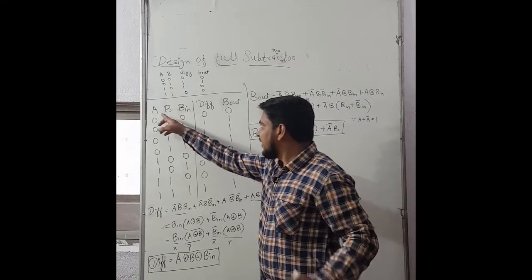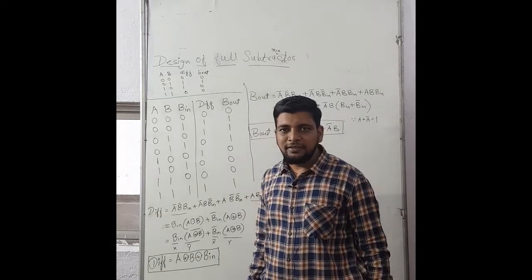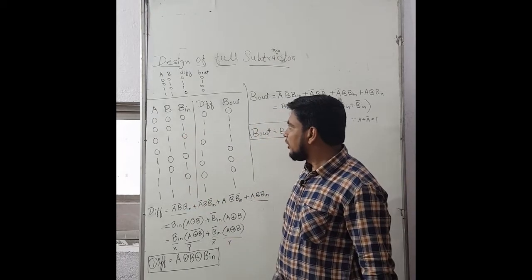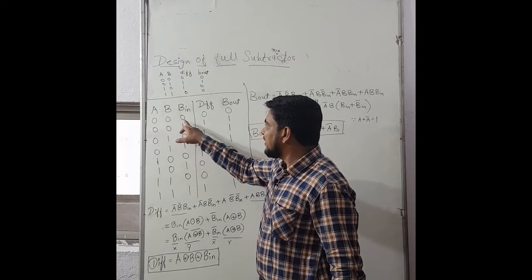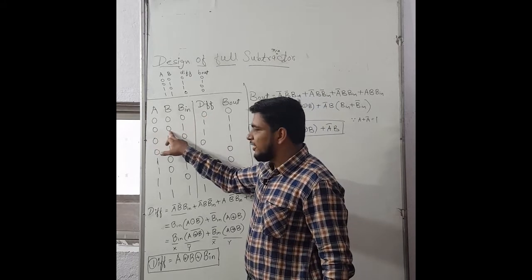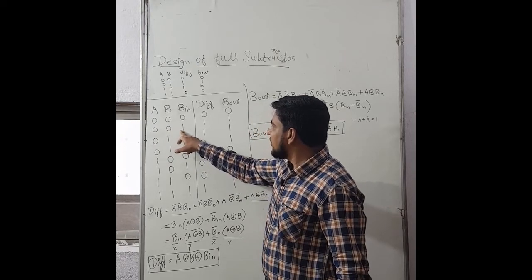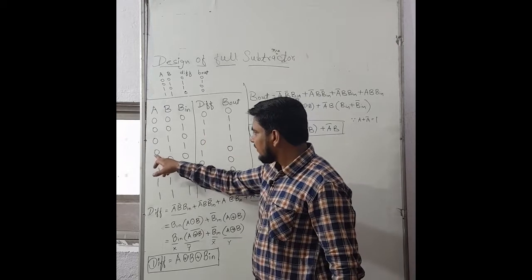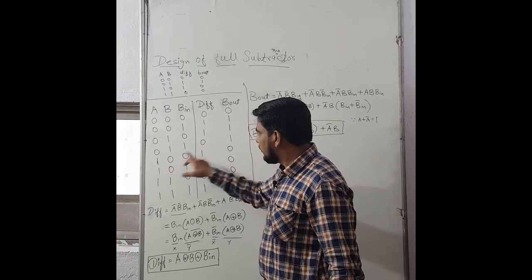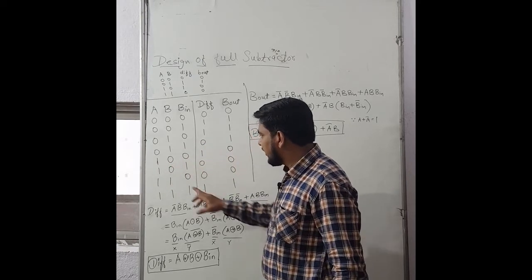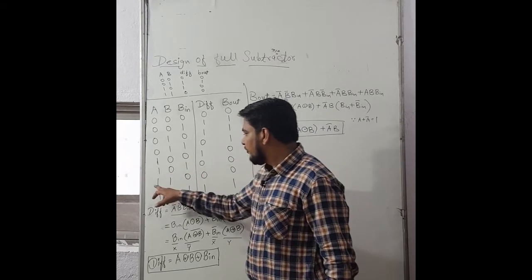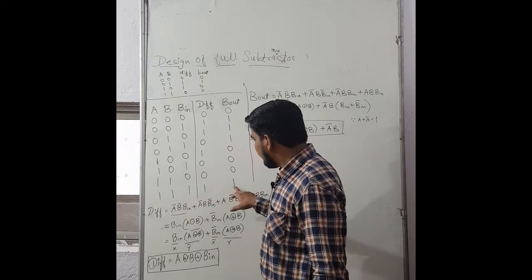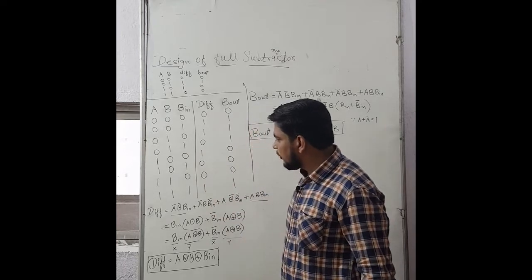With three input variables, the possible combinations are 2 raised to 3, giving 8 combinations from 0 to 7. We perform the subtraction in the truth table: 0 minus 0 minus 0 gives difference 0, no borrow. Cases with a 1 minuend and borrow-in generate various difference and borrow-out values. We complete all 8 rows, noting when borrow is generated (e.g., 0 minus 1 produces difference 1 with borrow generated) and when it is not.